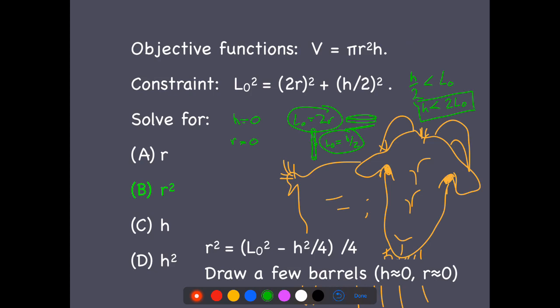2r has to be less than L₀. And I could put equals in both of these, actually.